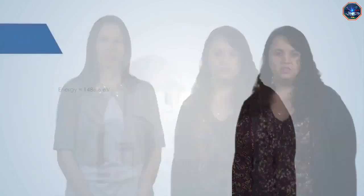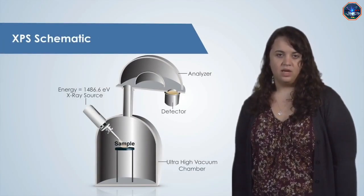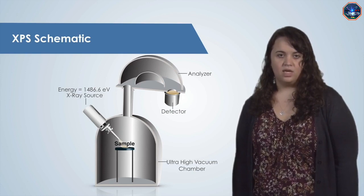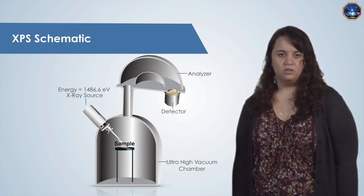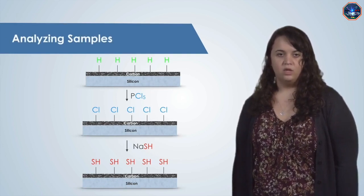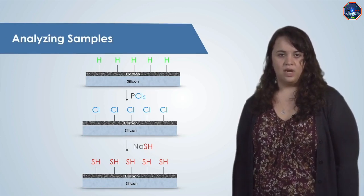As a reminder, this is a schematic of the XPS chamber. In XPS, we will hit the sample with X-rays that have enough energy to knock electrons out. Those electrons will be collected by the Electron Energy Analyzer and detected. The spectrum that is produced will tell us what elements are present on the surface of the sample. I'm trying to bind chlorine and sulfur to the surface of a carbon film with the chemical reaction shown here. Let's go to the lab to see if I was successful.